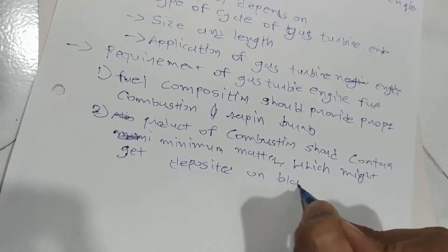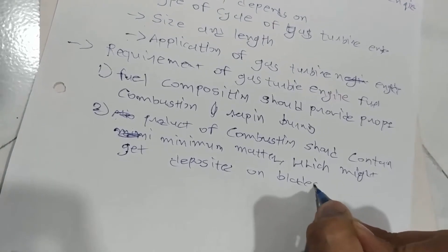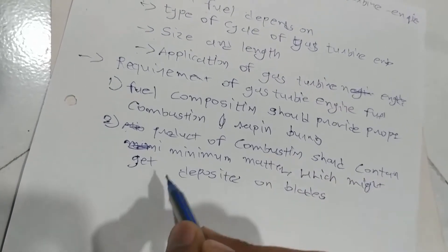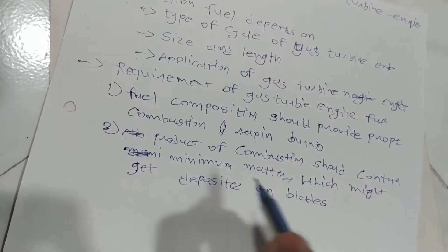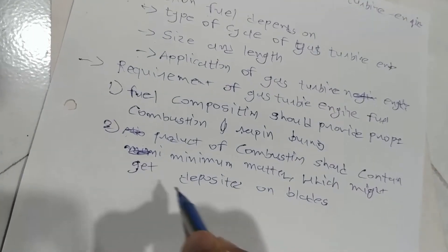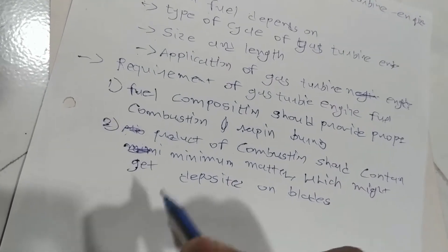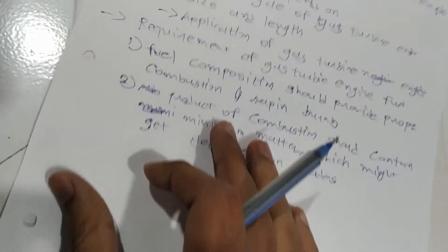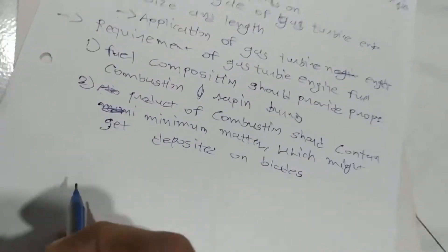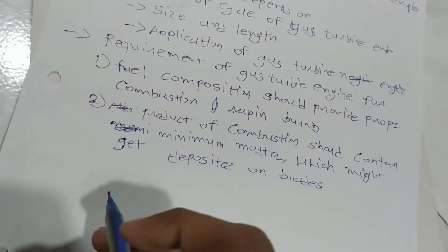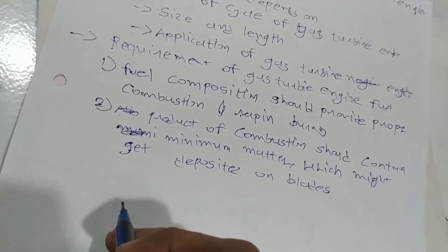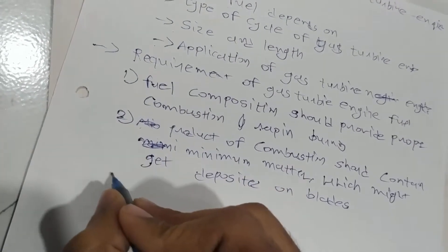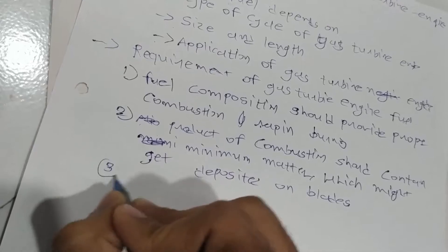The product of combustion should not be deposited on the blades, because if it gets deposited on the blades it will not be able to run the blades, move the blades, or rotate the blades. The third thing we have to consider is the highest heating value.